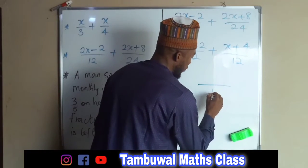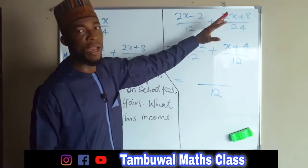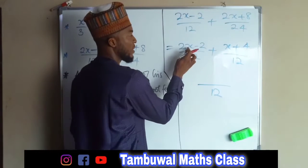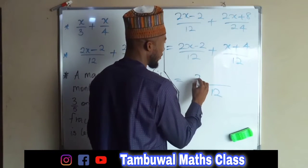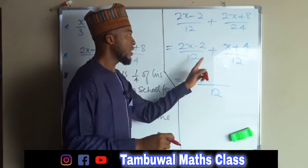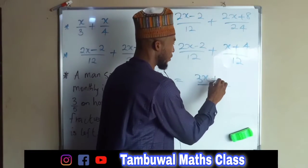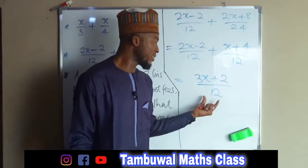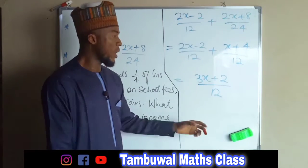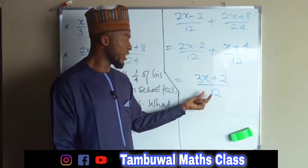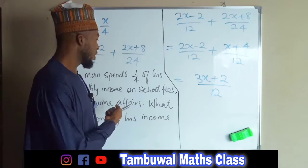We take one of the denominators, which is 12, then add the numerators together: 2x plus x is 3x, then minus 2 plus 4 is positive 2. So (3x plus 2) over 12 is the simplified form of these two fractions, and we cannot factorize further because there is no common factor.